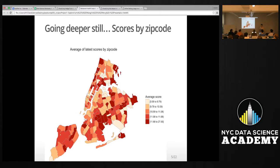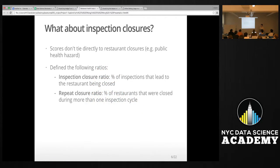Alright, but I don't know if you noticed, but as I was going through my presentation, I only talked about scores and grades. I didn't talk about closures. Alright, so the thing is, these scores and grades don't tie directly to closures. A restaurant could have a score of five followed with an A, but that one violation which earned them a score of five—that was a public health hazard—and they could be closed. So scores don't tie to closures directly.